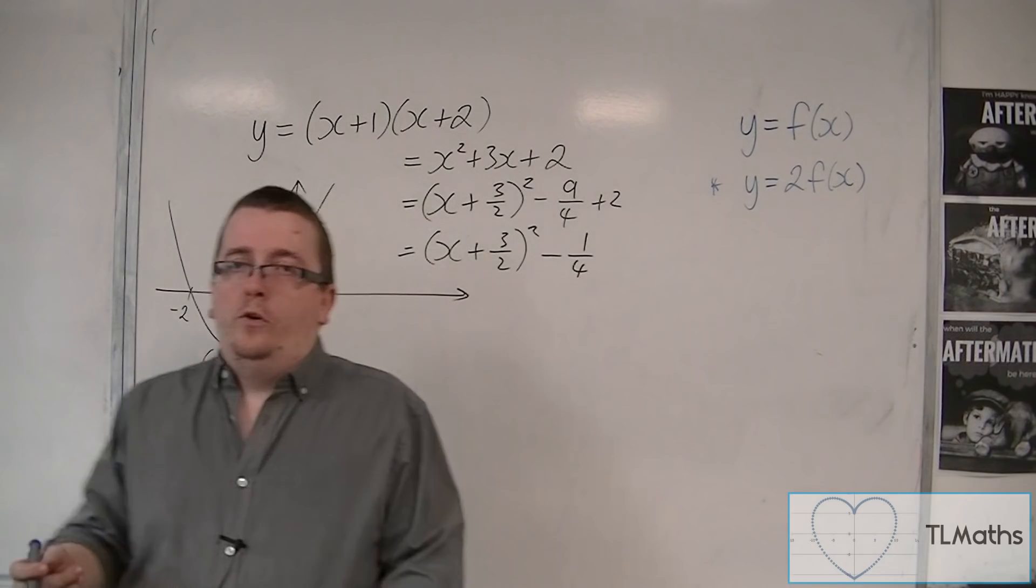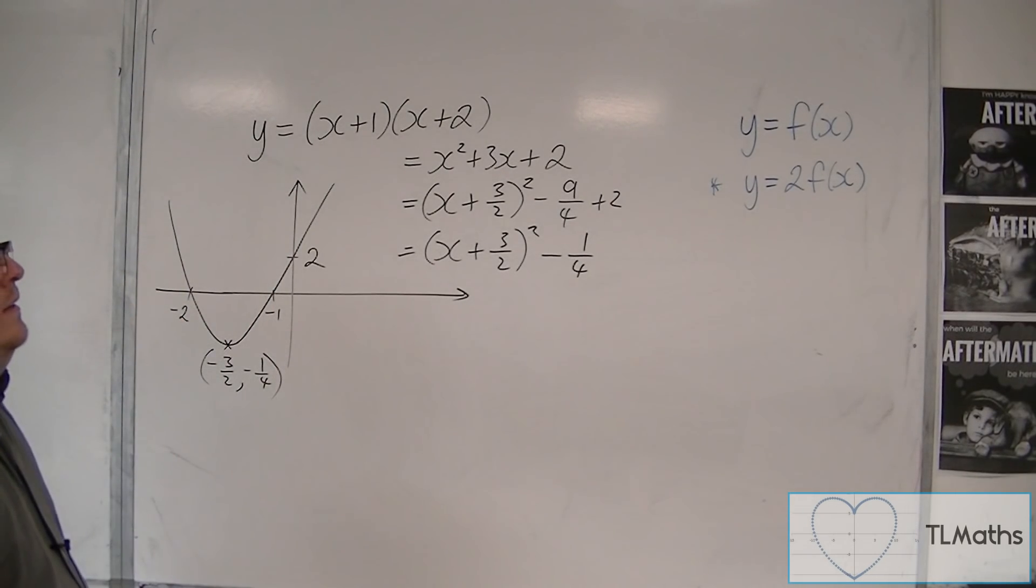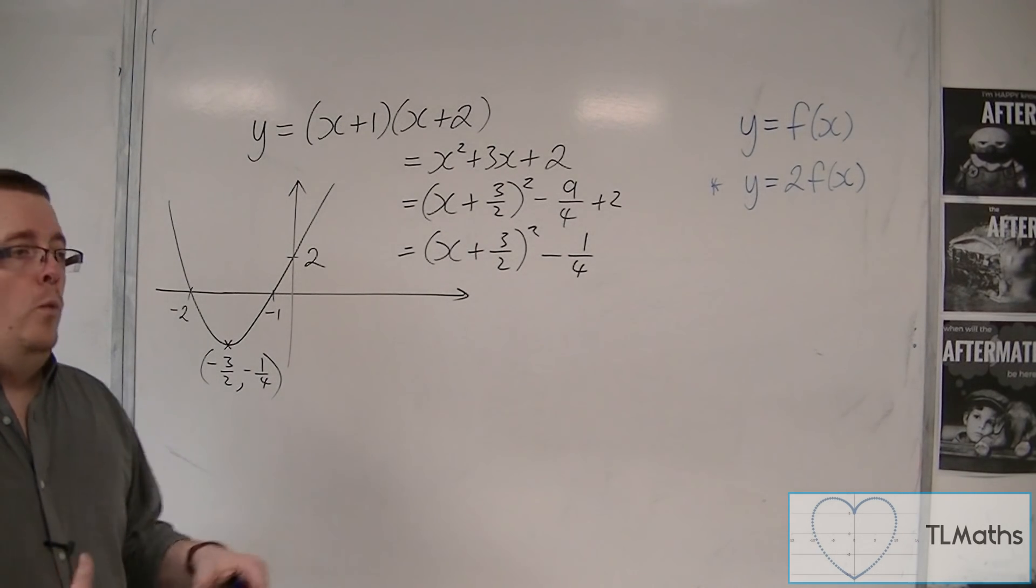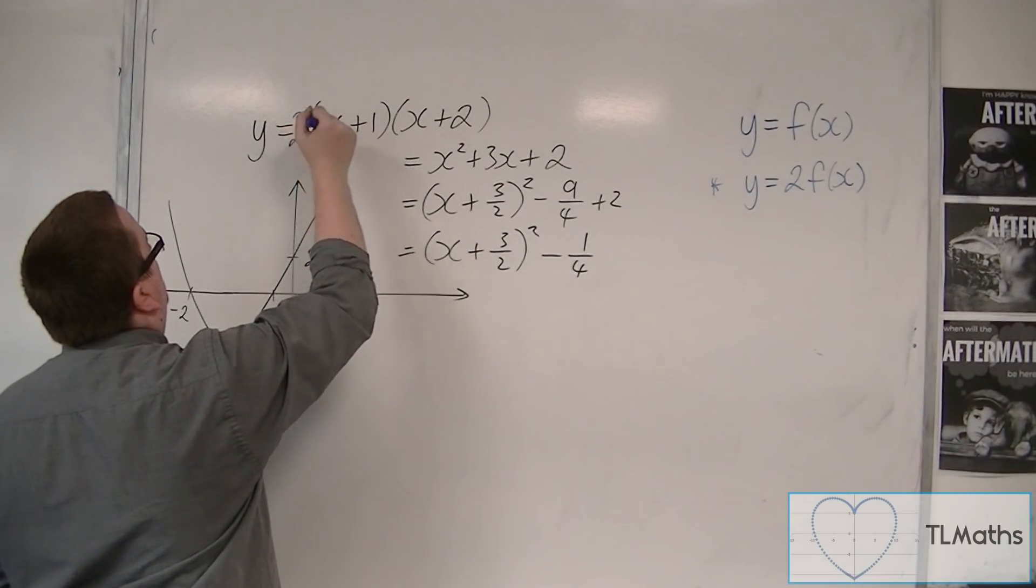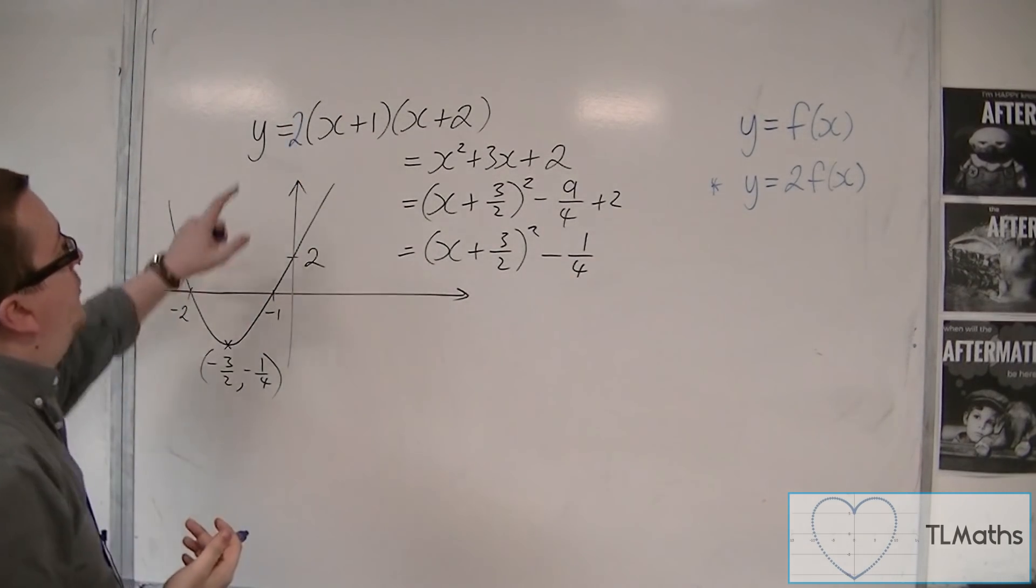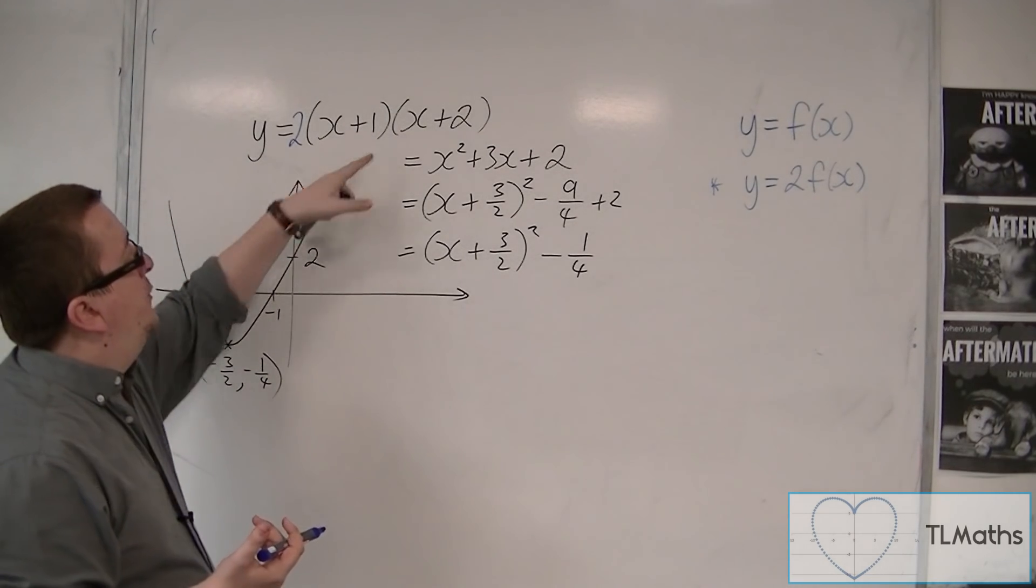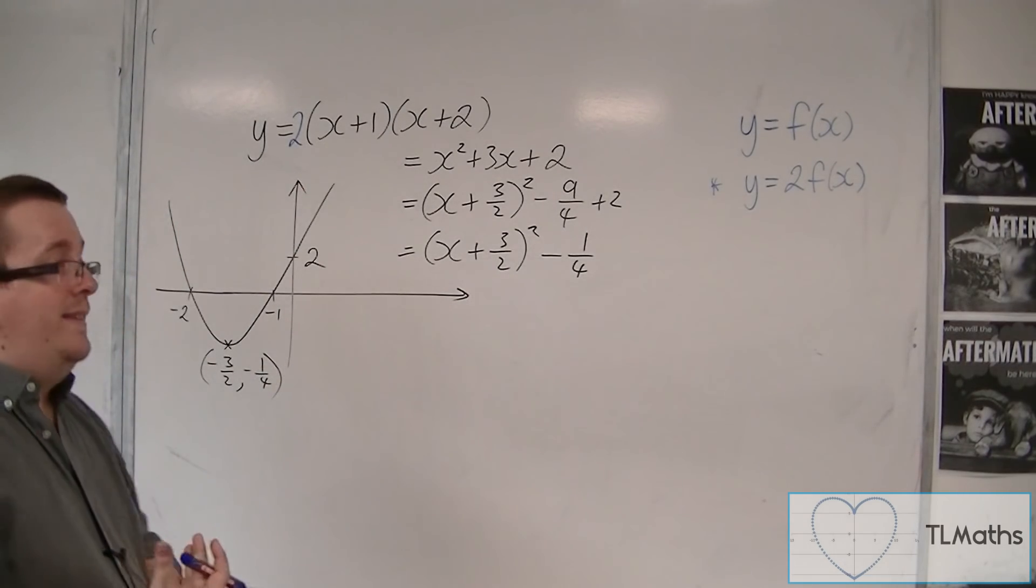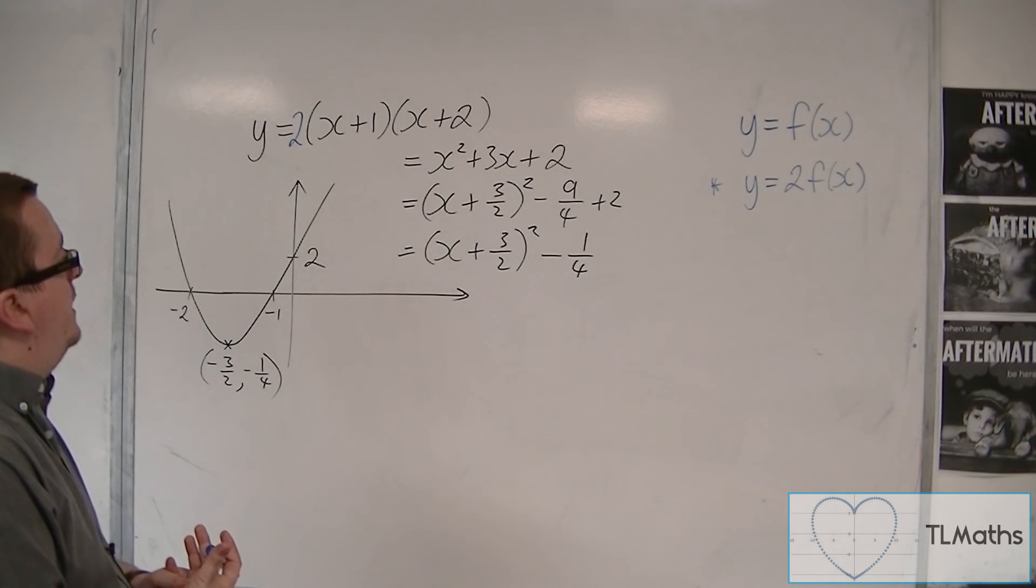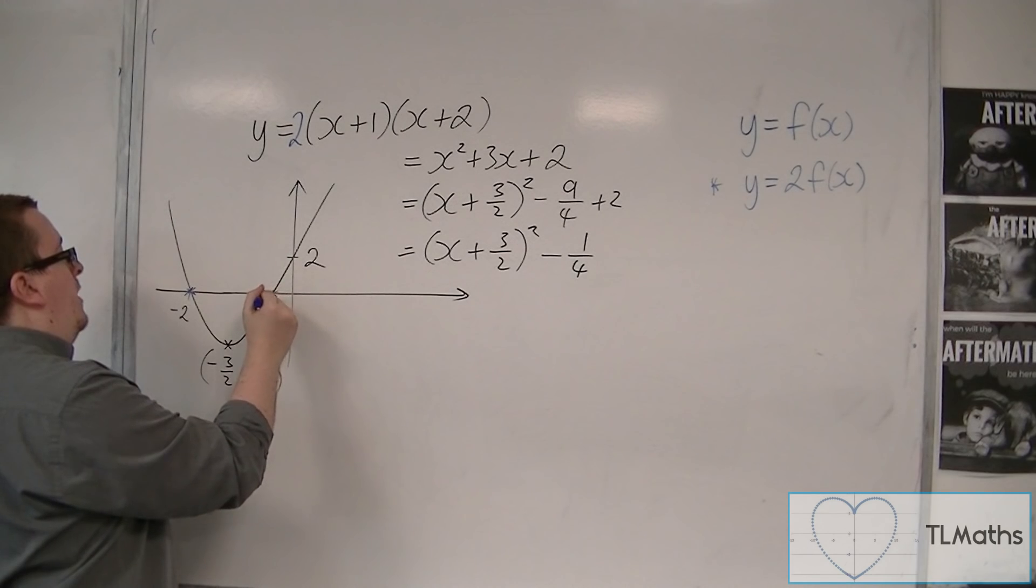What happens when we put 2 lots of f(x) in? How does that change the equation? I would have a 2 there. So I've got 2 lots of f(x). How's that going to change things? Well, I could still say that it's going through minus 1 and minus 2, because I still managed to factorise it into those brackets.